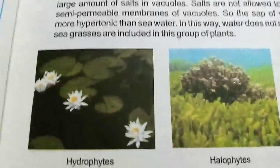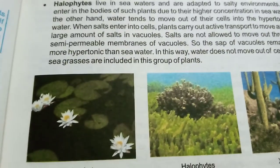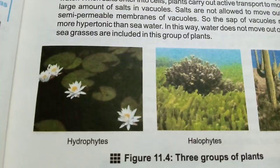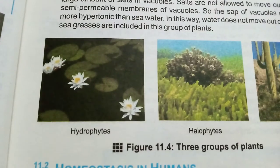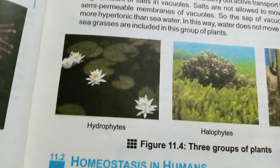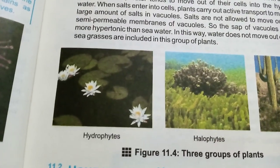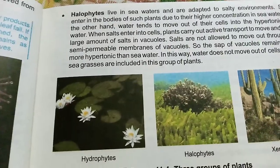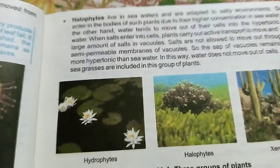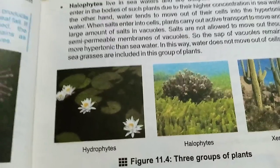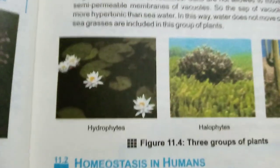To summarize the difference between the three groups: hydrophytes grow in fresh water, have plenty of water, and have large stomata on the upper surface of the leaf for water removal. Halophytes live in sea water, have highly concentrated salts in their vacuoles, creating a hypertonic condition so water does not move outside the plant. Xerophytes have thick waxy cuticles, succulent organs, deep roots to collect water, and cacti are a common example.